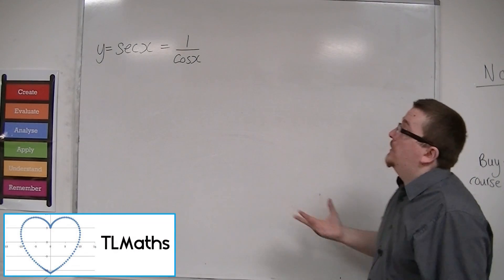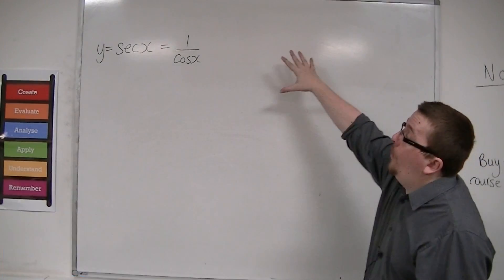So what does sec x look like? Sec is 1 over cosine.